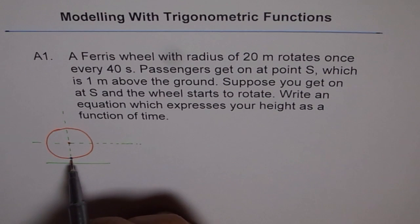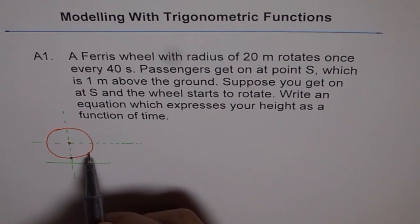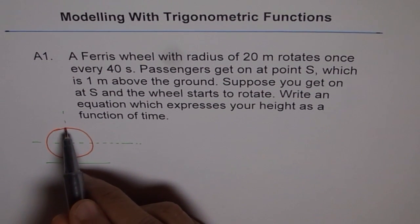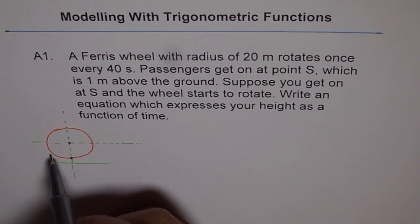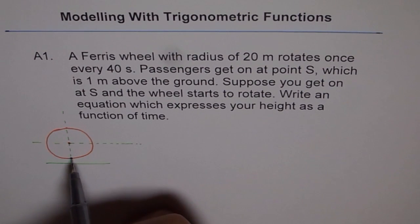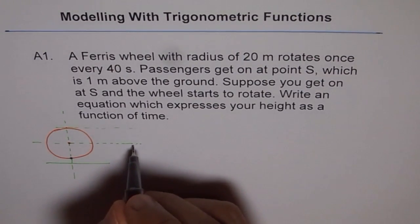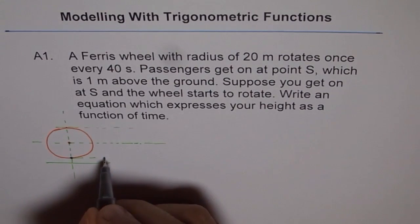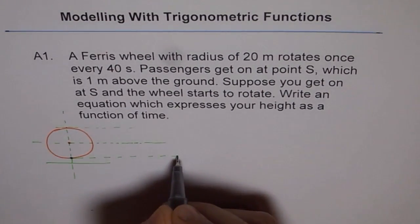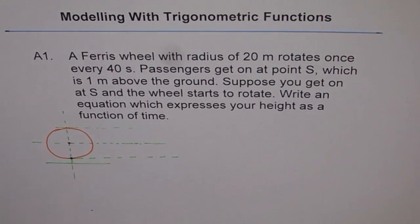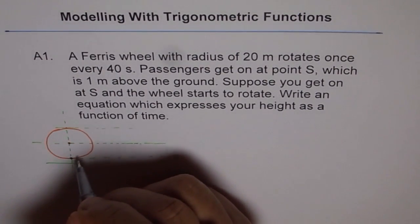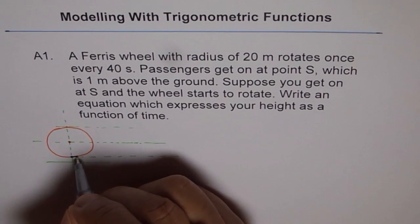If a person gets in here and the Ferris wheel starts moving, as the wheel moves counterclockwise, the person starts moving up and reaches the maximum at this point, then going down and then again up. Once we draw the maximum, the highest height attained by the person will be this, and that is going to be the lowest position. These are maximum and minimum values for us, and the curve could be given like this.